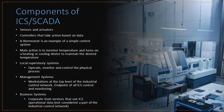Management systems are servers and workstations at the top level of the industrial control network. The endpoint of all ICS controls and monitoring tie in for business systems. These systems have broad visibility into the ICS environment, and it's often across multiple geographical regions. Lastly, business systems are corporate-level services that use ICS operational data and telemetry for business applications, including billing, modeling, trending, and reporting. However, these are not considered part of the industrial control network.